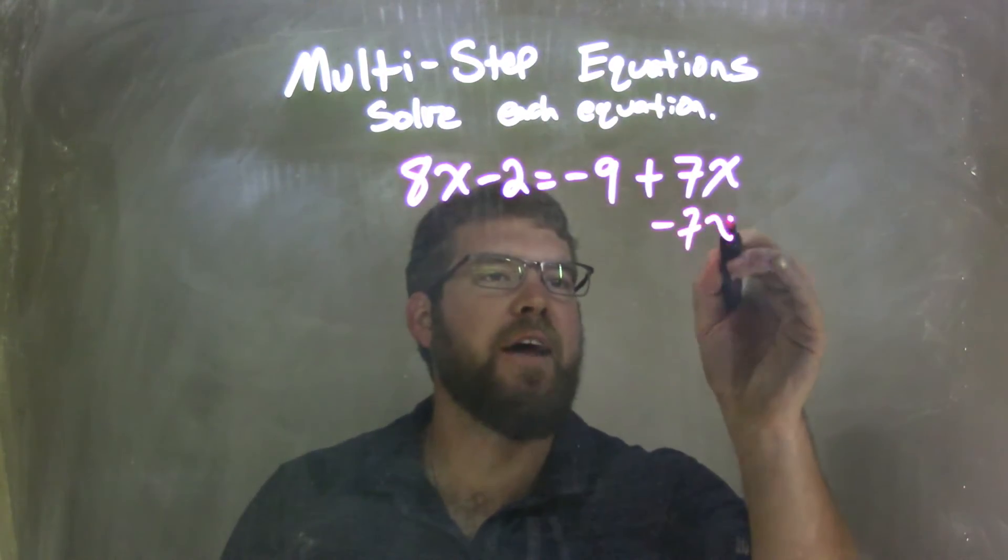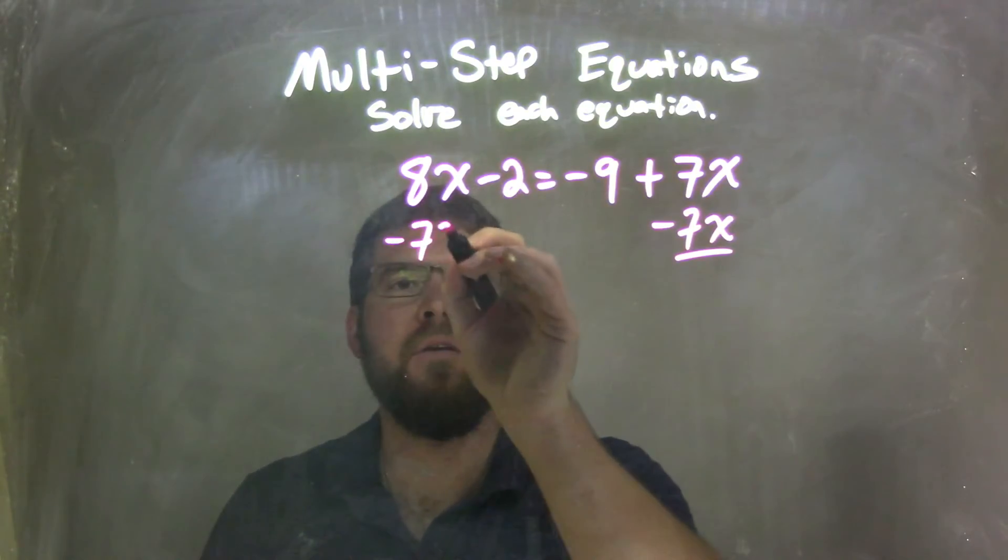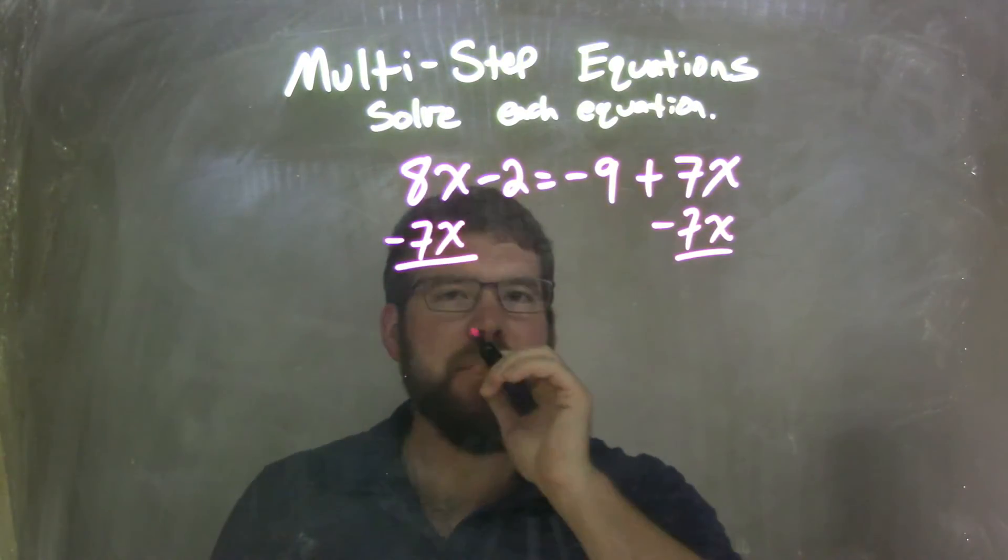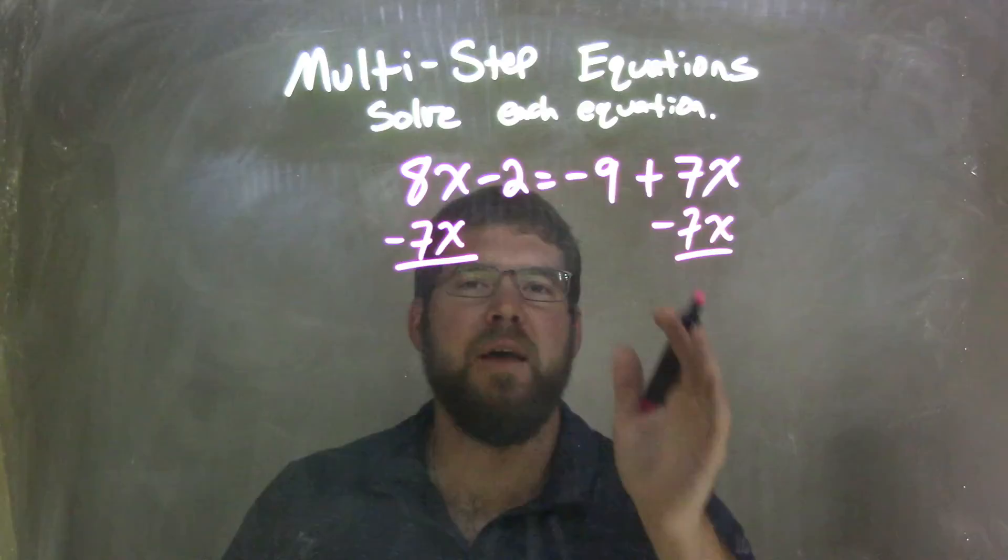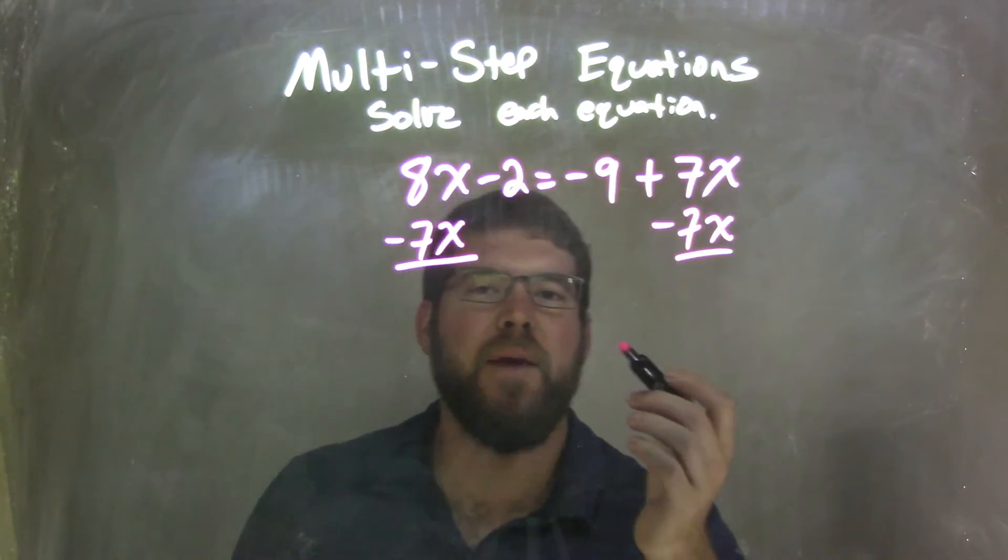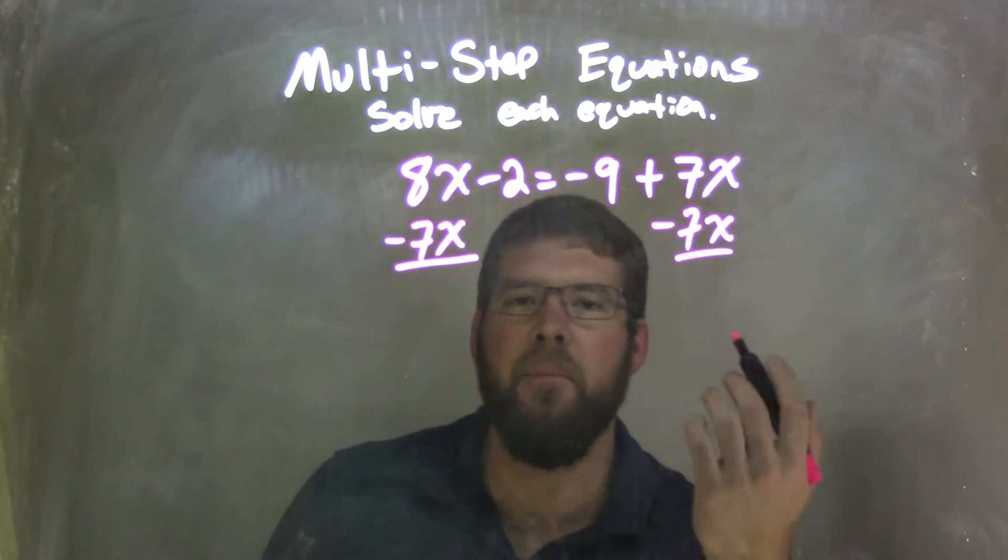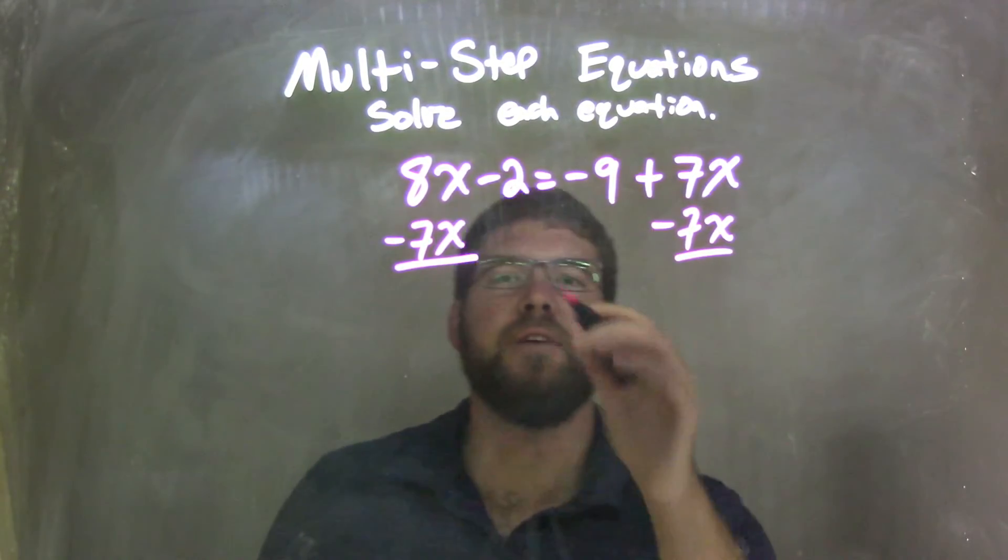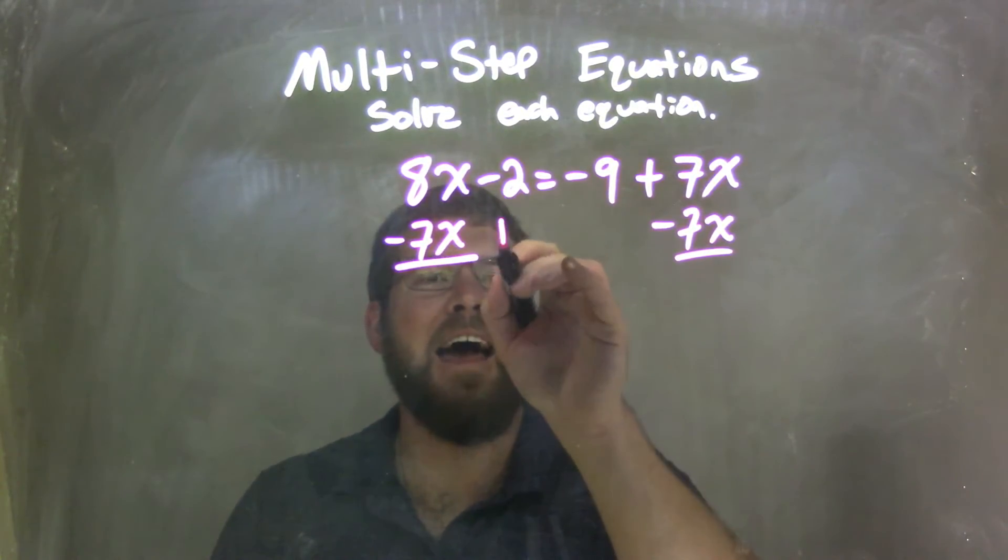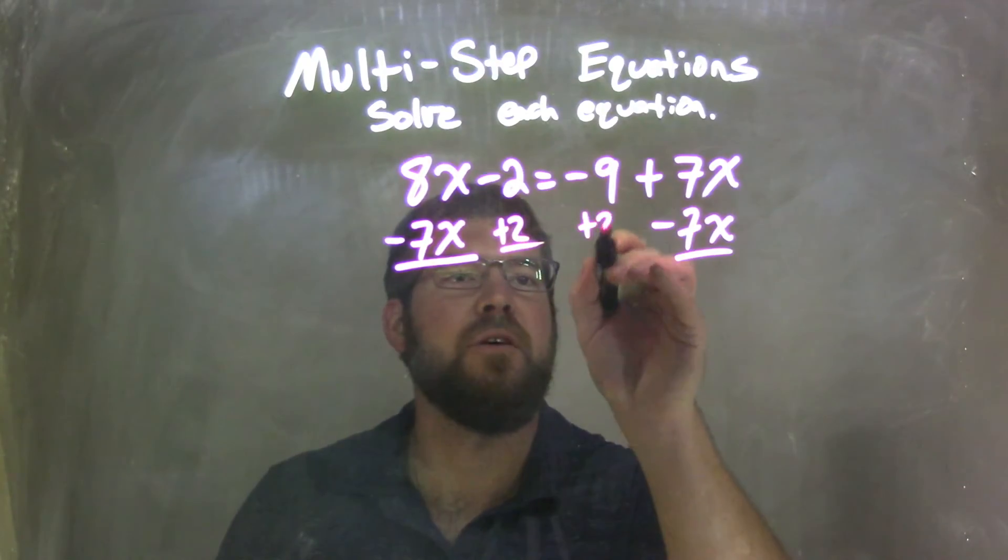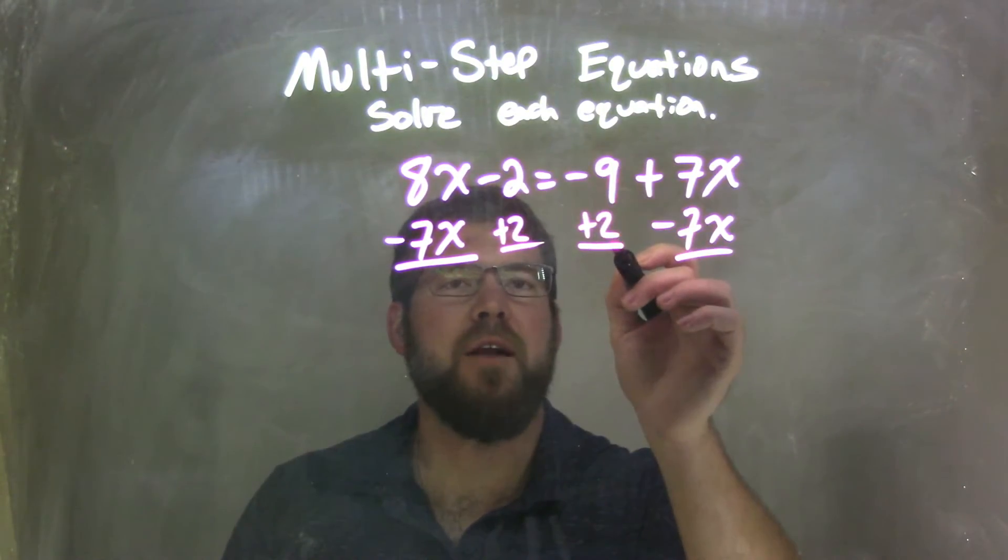So, I'm going to subtract 7x from both sides. Now, if you can do both at the same time, I'm going to do two steps at the same time here. It's up to you to write it out, but if you need to pause the video you can. I'm also going to add this 2 to both sides, to where the negative 9 is.